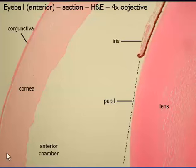Structures of the eye. We're looking at another H&E of the eyeball. And again, we're looking at the conjunctiva, the cornea.